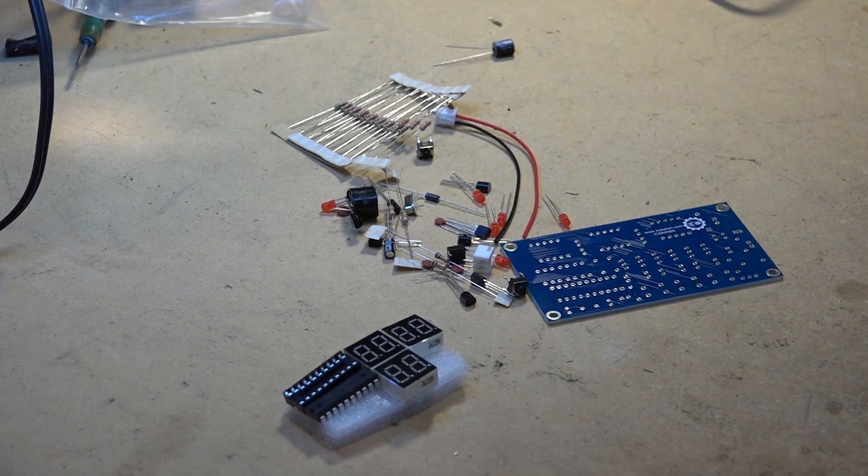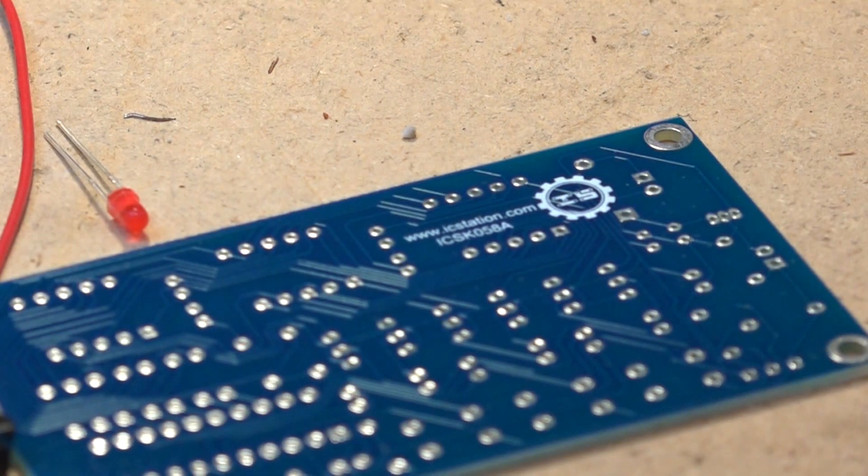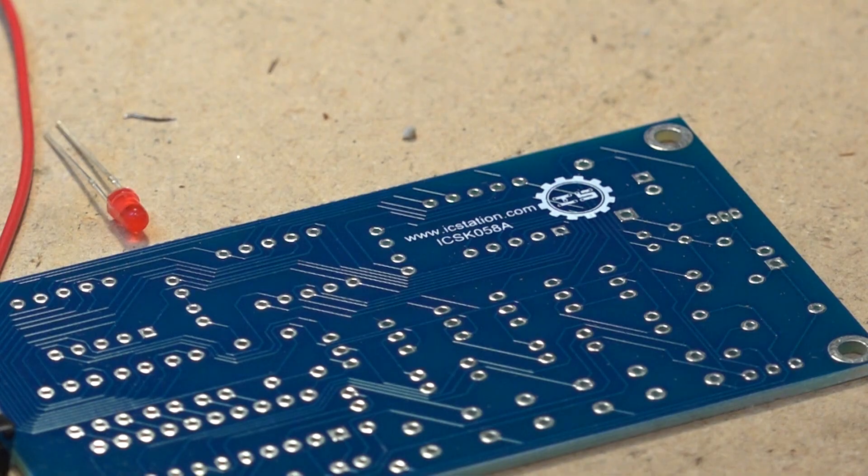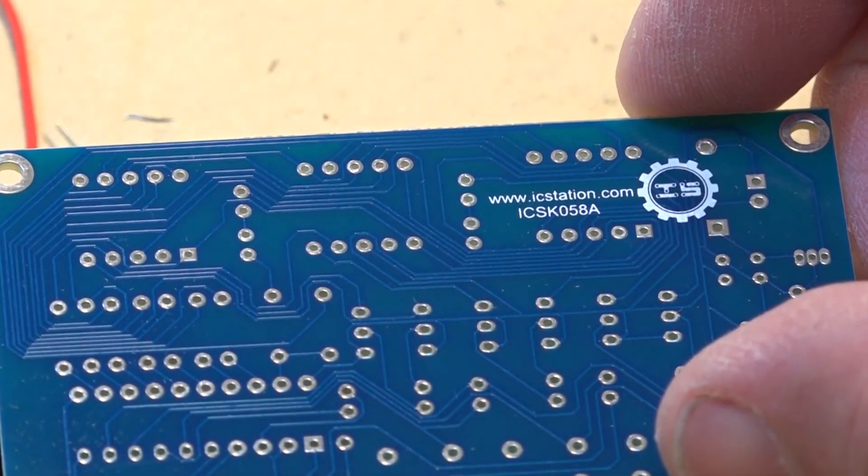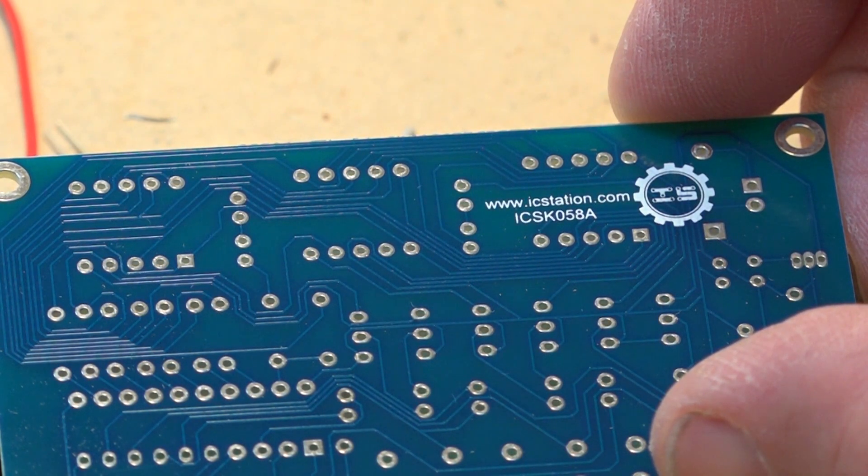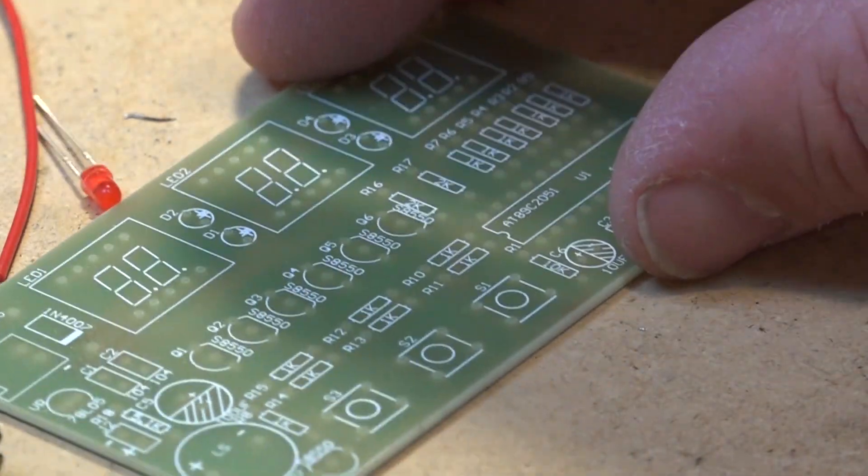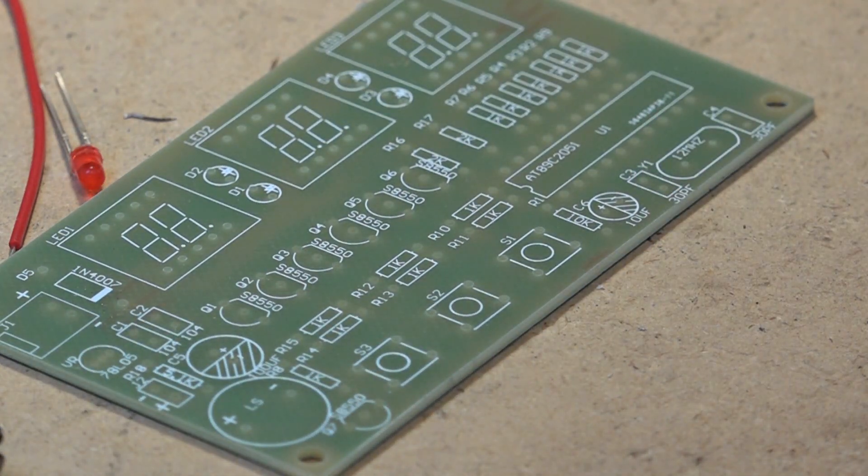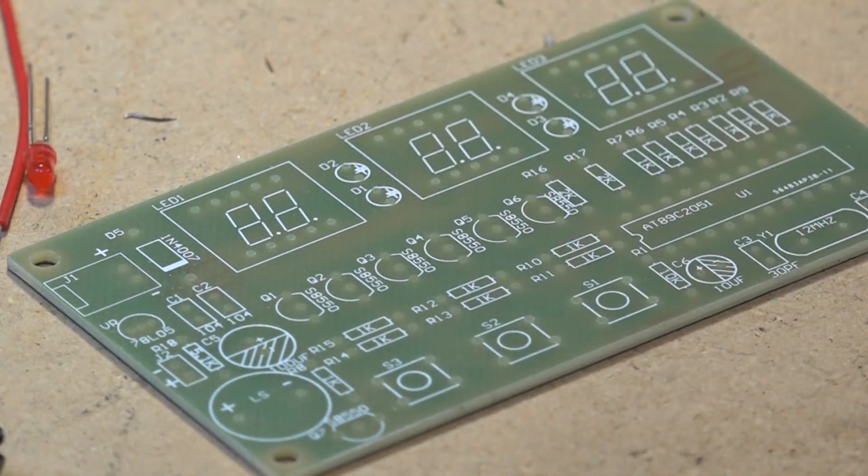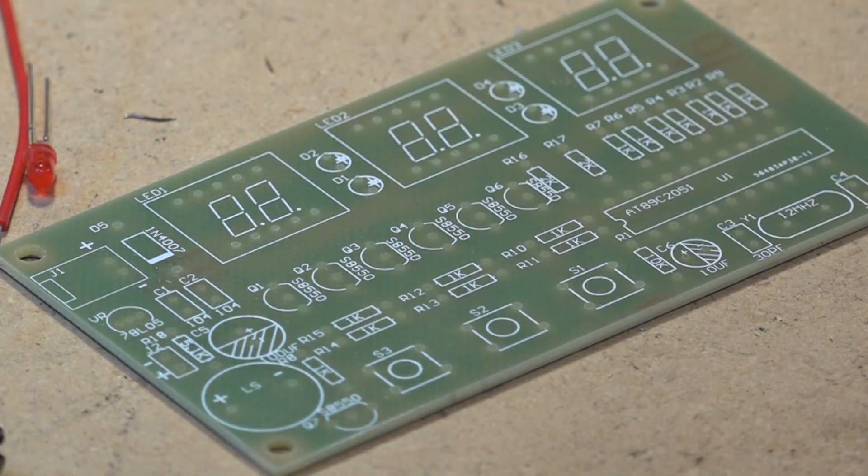I've got a bag full of parts, some LEDs, some switches, and an IC. It's probably an ATmega chip with some components and a nice circuit board complete with their logo on here. There's the kit number, ICSK058A. We're going to build this clock, and I shouldn't need any instruction manual because everything is labeled on the board.